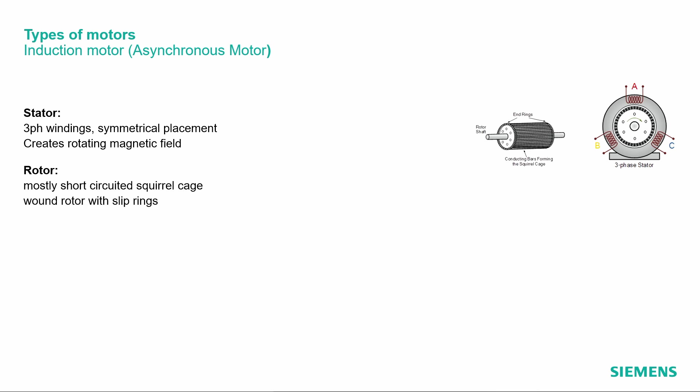As a second part we have the rotor. In an induction or asynchronous motor the rotor very often is a closed cage — with bars and rings at the ends to short-circuit all the bars. This is also called a squirrel cage, and it is one of the most common rotor types.